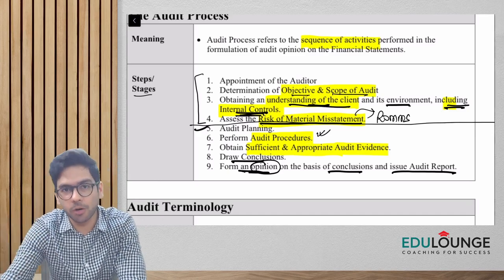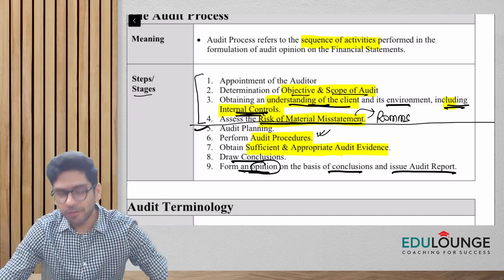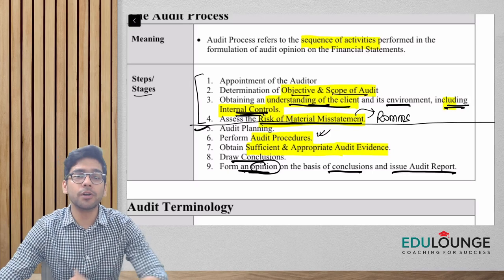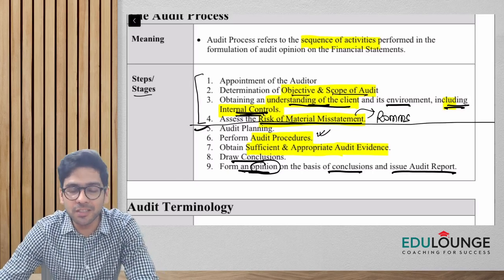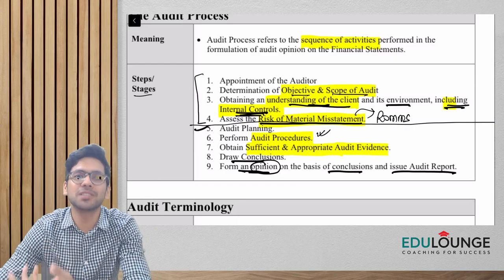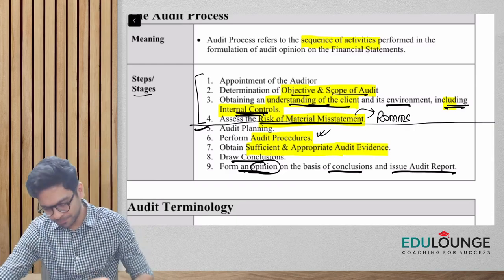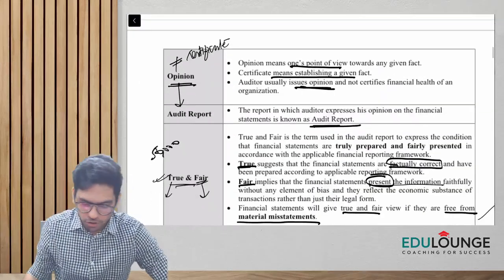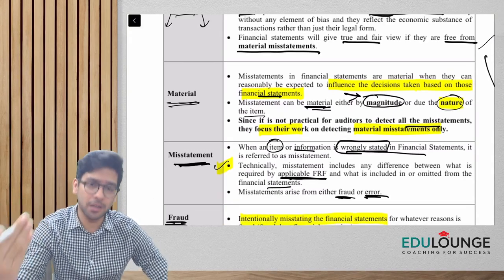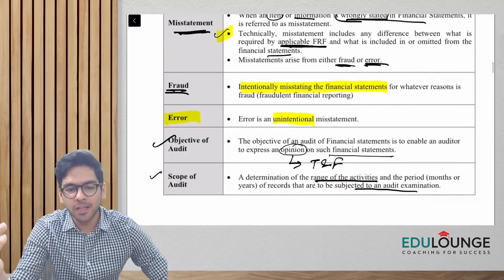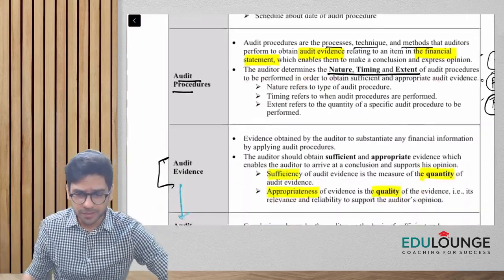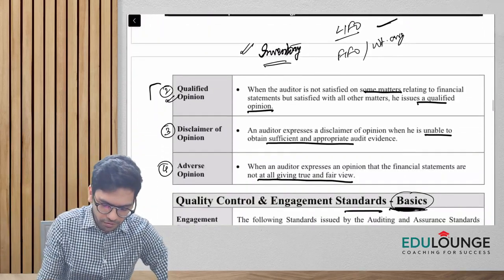We also discussed that there can be four different types of opinion the auditor might give: unqualified opinion, which is the clean opinion; qualified opinion; disclaimer, in case the auditor is unable to obtain sufficient and appropriate audit evidence; and finally adverse opinion, if everything seems to be misstated and not as per the financial reporting framework. We also covered terminologies like true and fair view, misstatement, material misstatement, scope, internal controls, and risk of material misstatement.